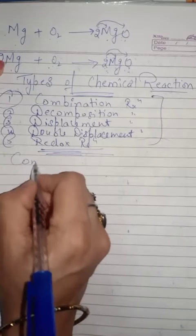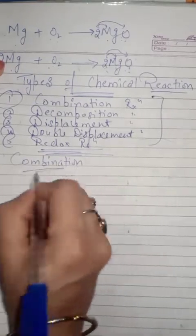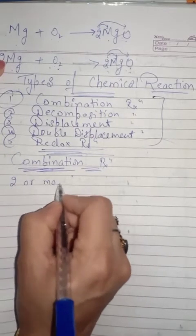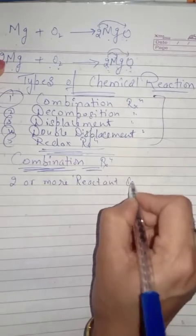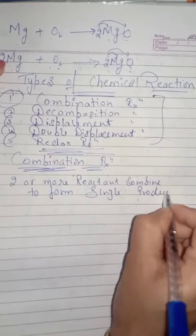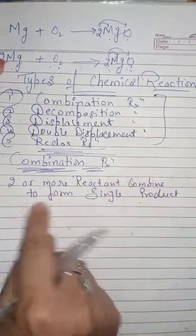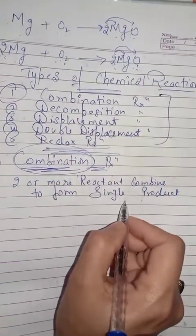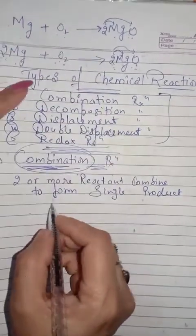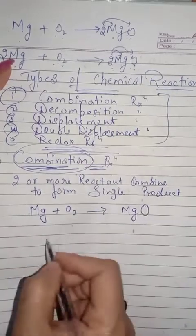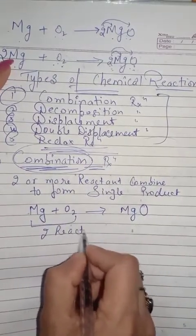The first type is combination reaction. As the name suggests, 'combination' means combine. The definition is: a reaction in which two or more reactants combine to form a single product. For example, magnesium plus oxygen combine to form MgO. Here we have two reactant molecules and a single product — magnesium oxide — is formed.